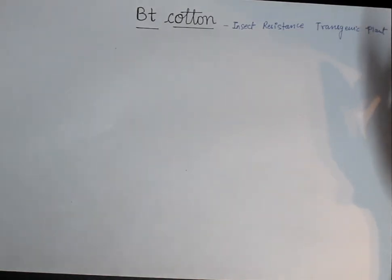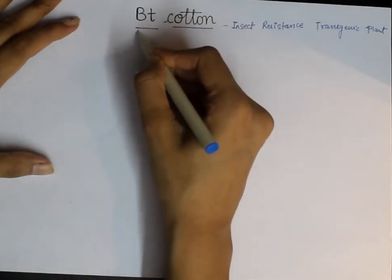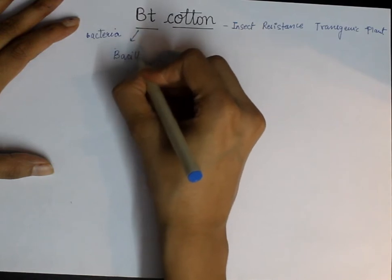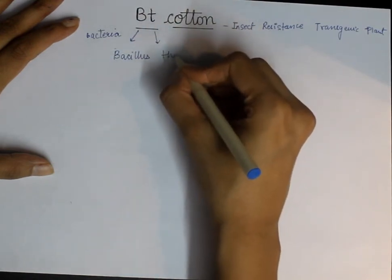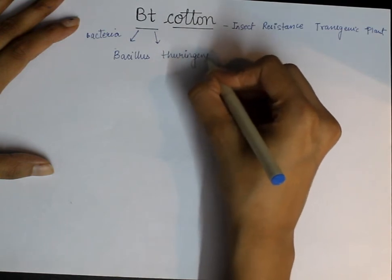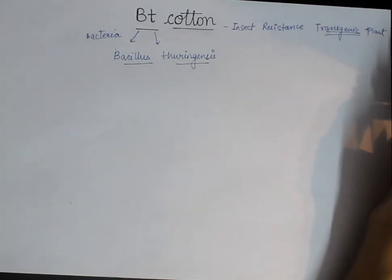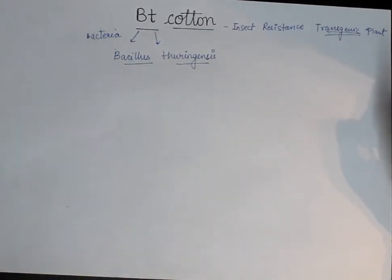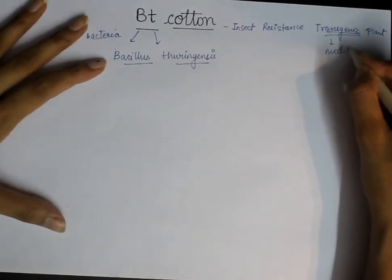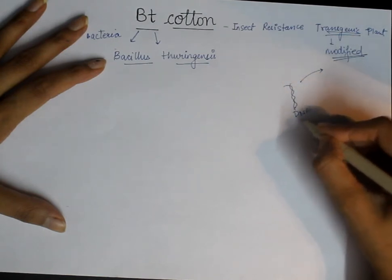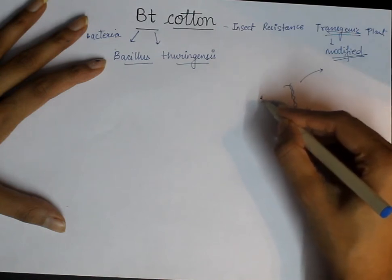So let's get started. How is BT cotton made? The name BT stands for Bacillus thuringiensis — that is the whole bacteria name. Now, what is the meaning of transgenic? Transgenic means that we have modified the plant. How did we modify that plant? We provided a foreign gene — meaning DNA — from a different source and put it into the plant.